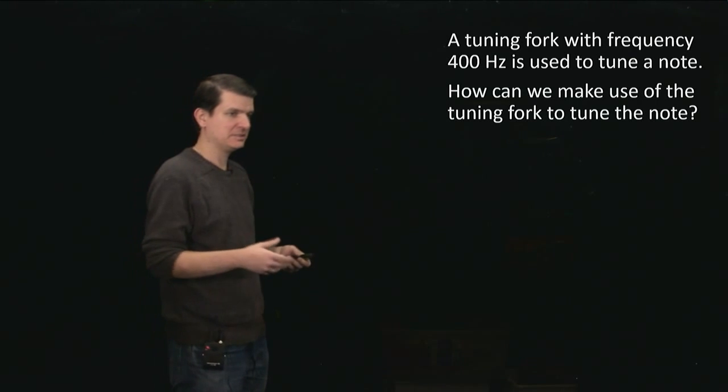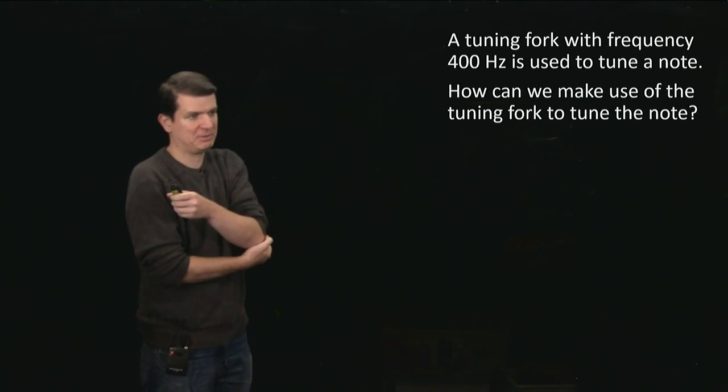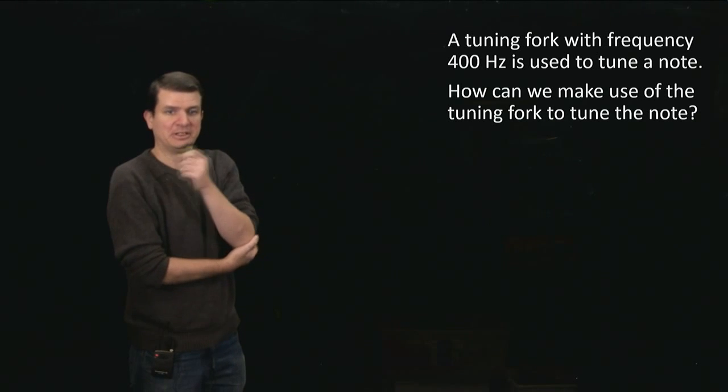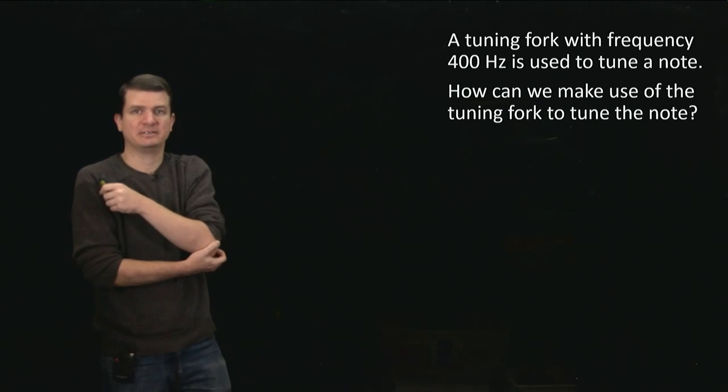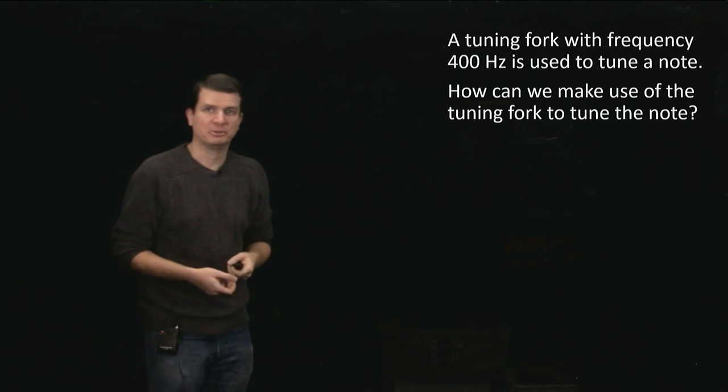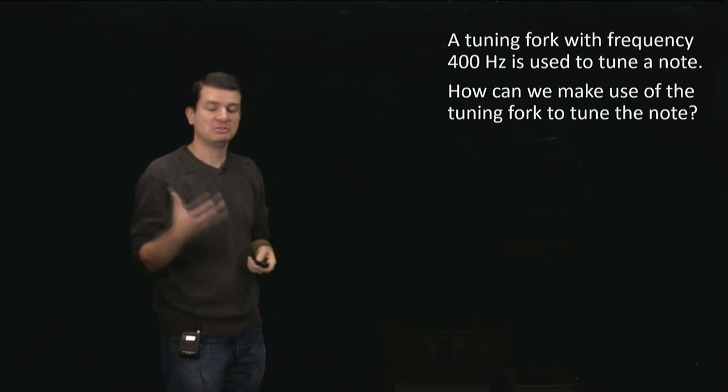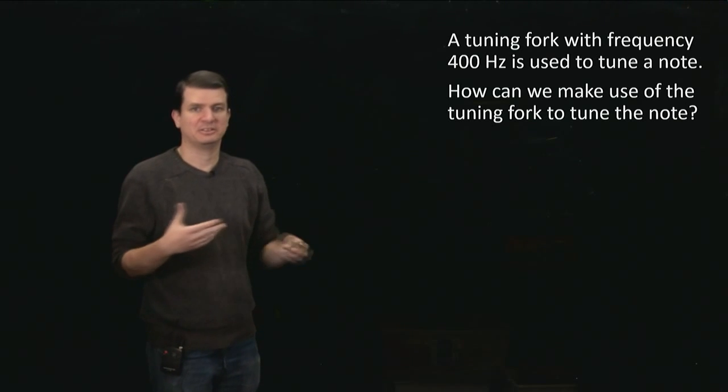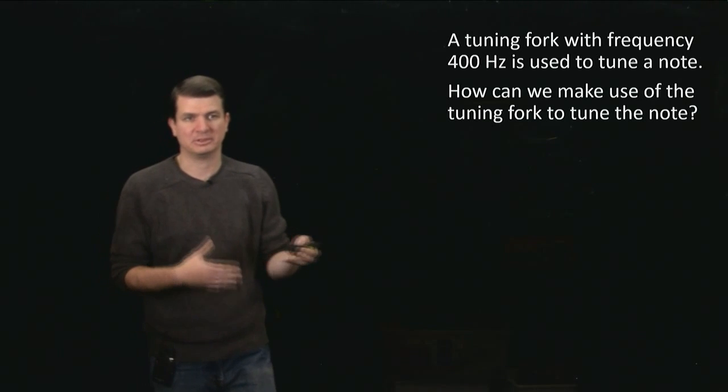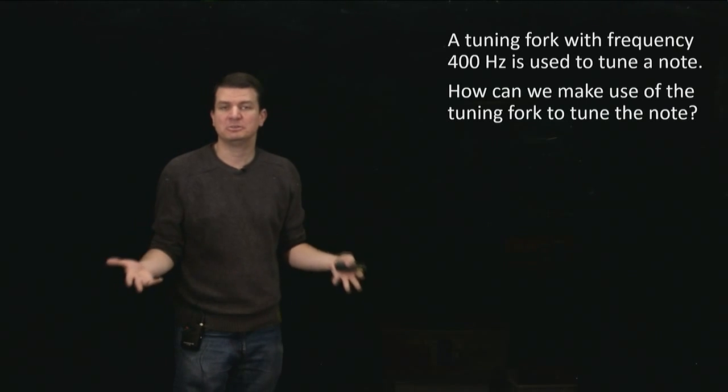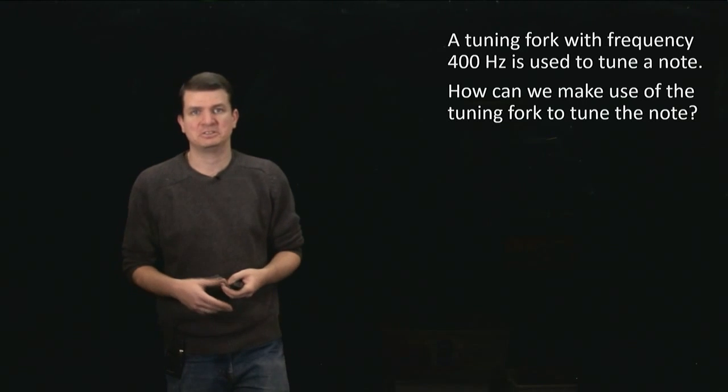So the question is that we've got a tuning fork with a frequency of 400 hertz. If you hit it and make it vibrate, the sound it produces is a 400 hertz tone, and we want to use that to tune the note of a keyboard or piano. We want to know how do we actually use a tuning fork to tune the note.